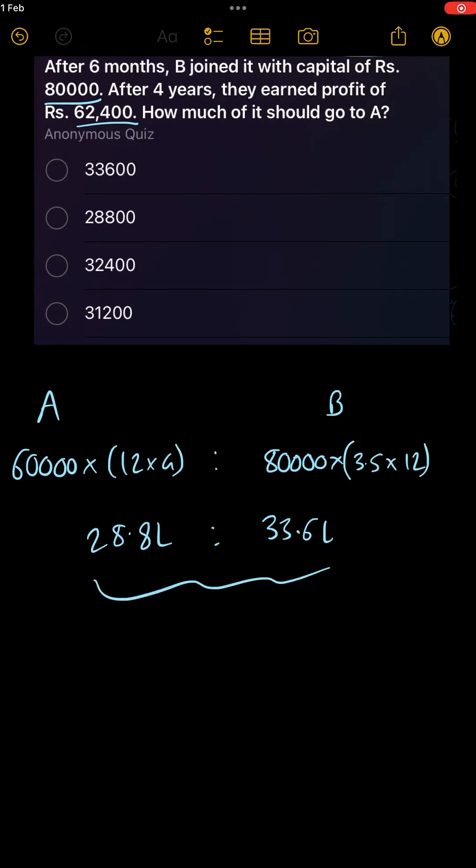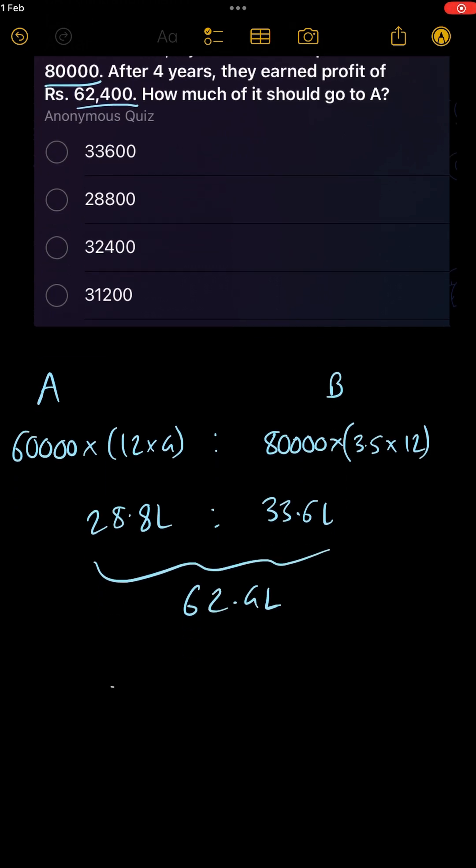To divide, take the total of this which is 62.4 lakhs. Now total profit is 62,400 divided by the total, multiplied by A's share. If you calculate, A's share should be 28,800 which is option B.